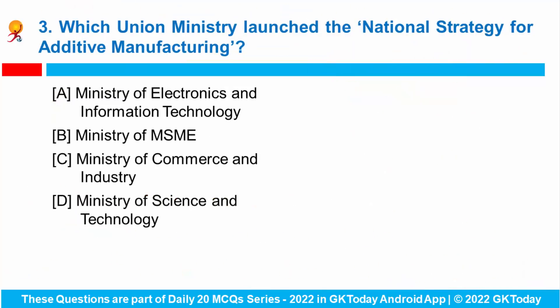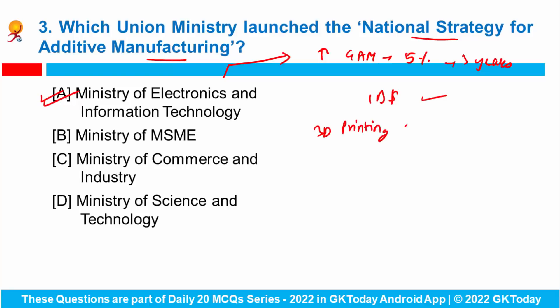Question number three: which union ministry launched the National Strategy for Additive Manufacturing? The Ministry of Electronics and IT released the National Strategy for Additive Manufacturing. As per this strategy, India aims to increase its share in global additive manufacturing to 5% within the next three years, and it could likely add 1 billion dollars to GDP. 3D printing or additive manufacturing uses computer-based designing to make prototypes or working models of objects.